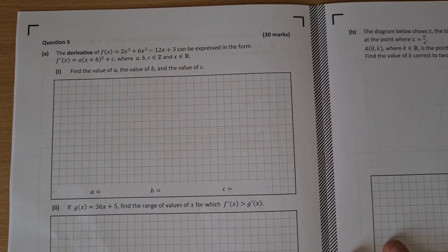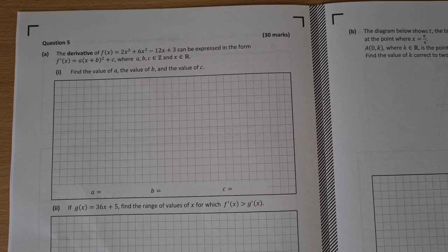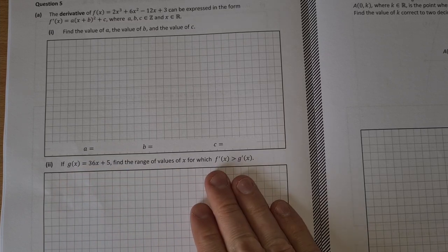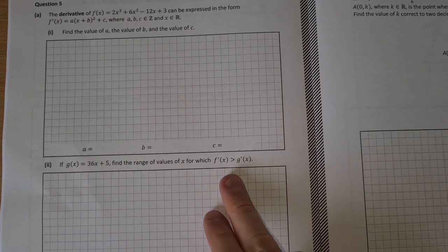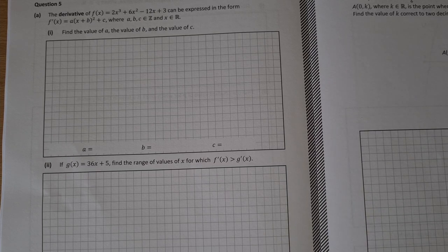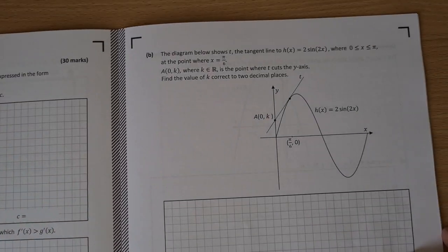Question five. Calculus. Derivative can be expressed in the form of this, so find a, b and c. So differentiate it and rearrange it into that form there. Another function here. Find a range of values for one derivative greater than the other derivative. So differentiate both, let one greater than the other and solve.